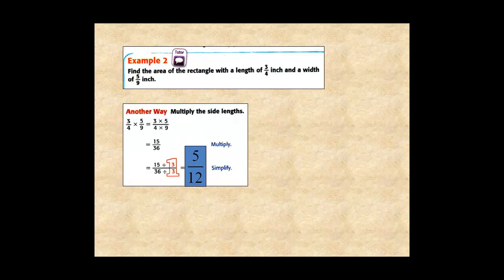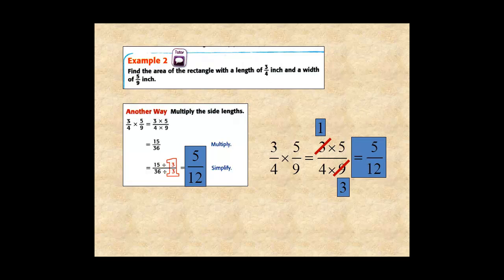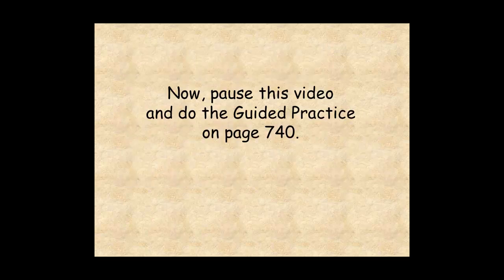Notice that you could have cross-canceled, dividing numerator and denominator by 3 for 5 twelfths. Now pause this video and do the guided practice on page 740.